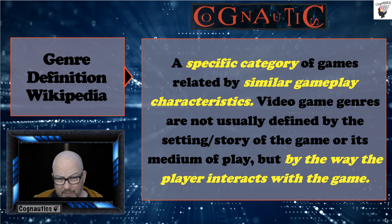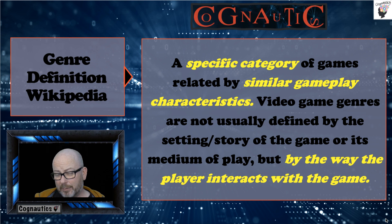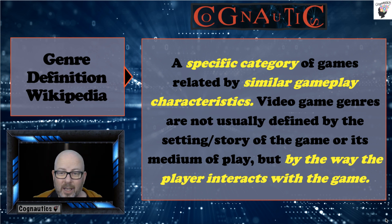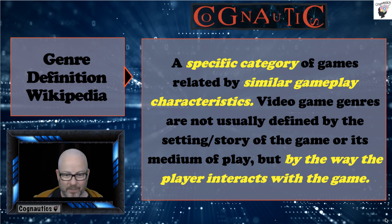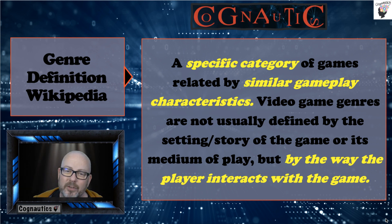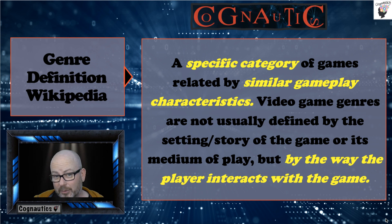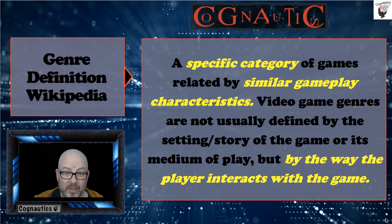When we talk about genre, the definition from Wikipedia is: a specific category of games related by similar gameplay characteristics. A game that belongs to a certain genre will be defined by a certain number of characteristics which would be true of any game in that genre. First person shooter is an example — whether it's Call of Duty or Halo, take out the backstory and the weapons, and the games are very similar. They're not defined by the story or the medium of play, but by the way the player interacts with the game.